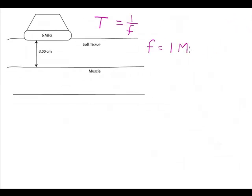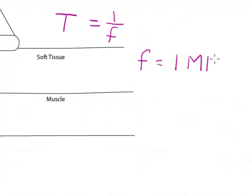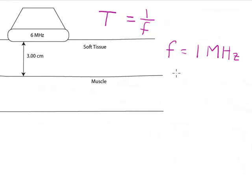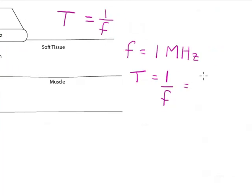I'm going to start with an example of 1 megahertz and then go on to an example using the 6 megahertz transducer shown here. So if I want to calculate the period, it's equal to 1 divided by the frequency, and substituting in my value for frequency of 1 megahertz.